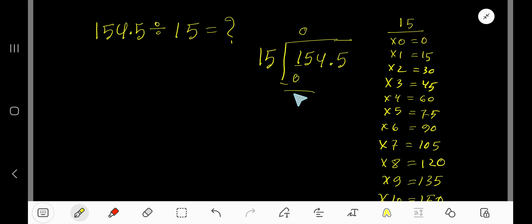15 goes into 15 how many times? One time. 1 times 15 is 15, subtract 0, bring down the next digit 4. 04 means 4. 15 goes into 4 how many times?